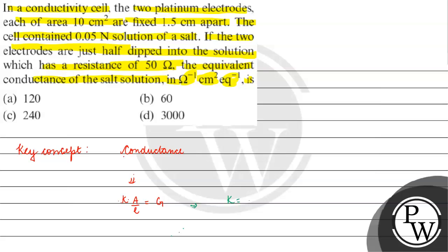So kappa will be equal to G into L by A. G is 1 upon R — that is conductance. So, 1 upon 50 into L. The distance between the electrodes is 1.5 cm.